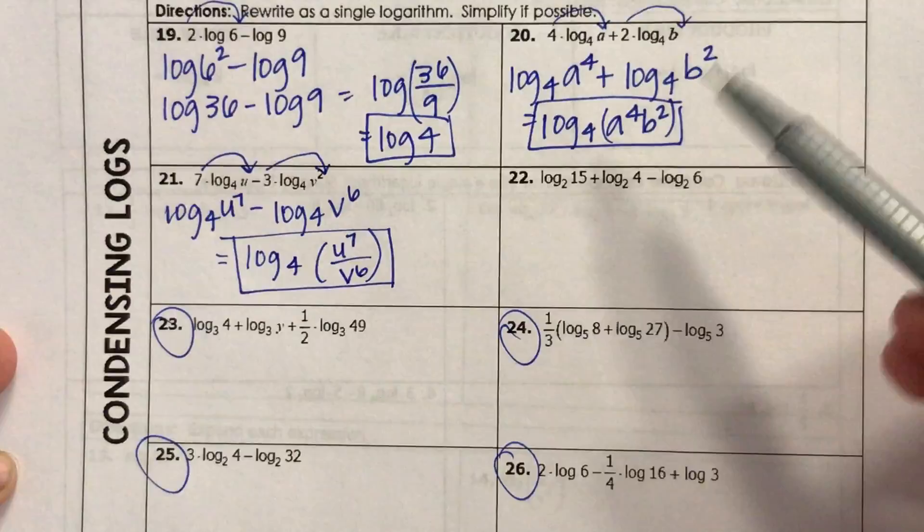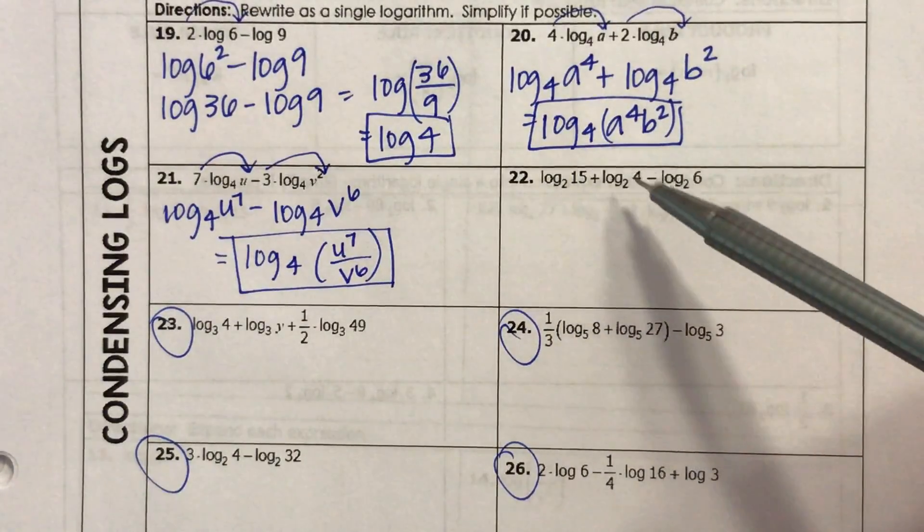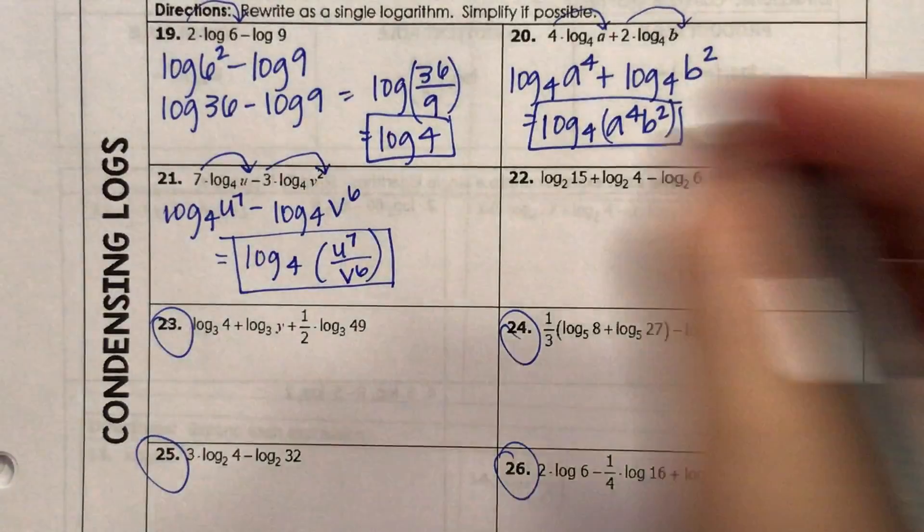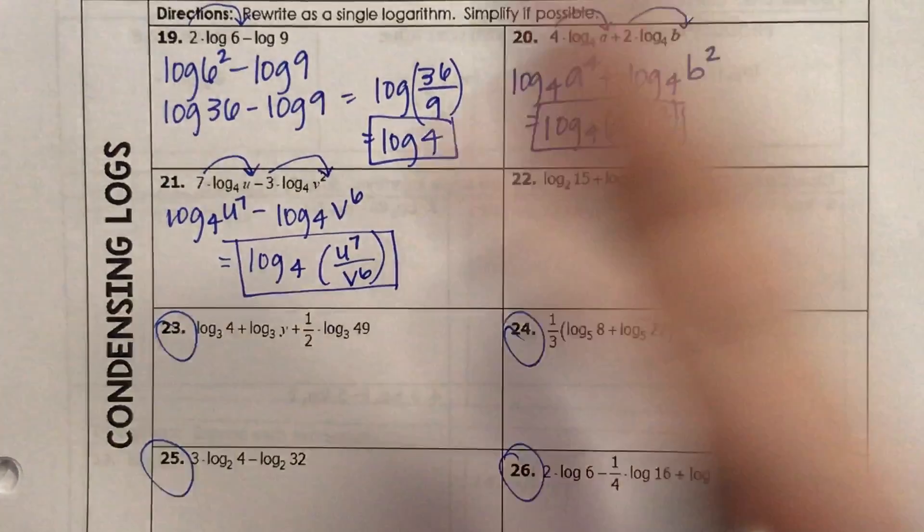One more, this one looks a little complicated, so let's just break it up. Log base 2 of 15 plus log base 2 of 4 minus log base 2 of 6. So let's deal with these two first. This is a sum, so I can make this a product.